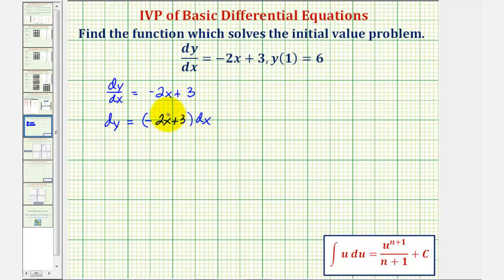And now we can integrate both sides of the equation. If it's helpful, we can think of this as the integral of 1 dy, and then we'll integrate -2x + 3 with respect to x. Well, the anti-derivative of 1 with respect to y would be y plus c, but since we'll have a plus c or a constant on the right as well, we'll just put plus c on the right.